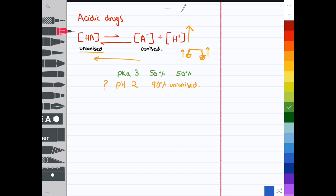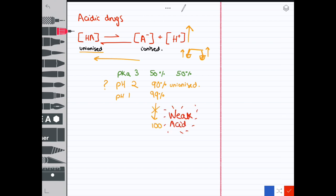If you move below the pKa by two numbers to pH 1, you would see that it's 99% unionized and 1% ionized. But it would never reach 100% ionization because these are weak acids and weak acids only partially dissociate. They're never 100% ionized or unionized.